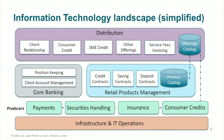This is a simplified view of an information system that many banks share. In those types of systems, one change in one application impacts many more applications, creating many dependencies. As a result, it takes a lot of time to implement new products and new requirements, and the monolithic nature of those systems ends up costing a lot and slowing innovation significantly.